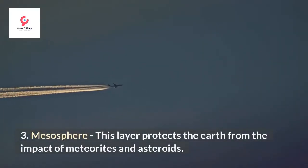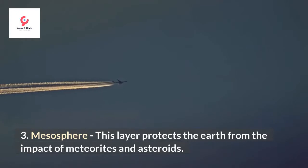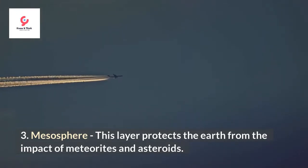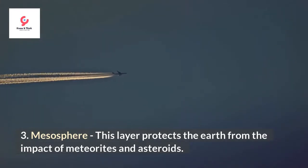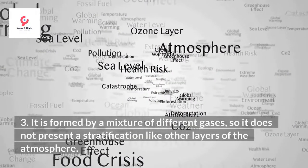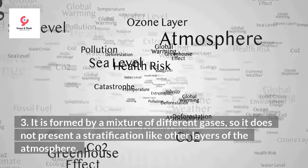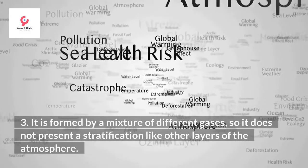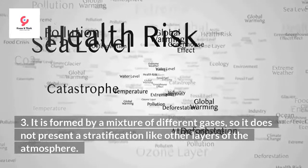Mesosphere: this layer protects the Earth from the impact of meteorites and asteroids. It is formed by a mixture of different gases, so it does not present a stratification like other layers of the atmosphere.